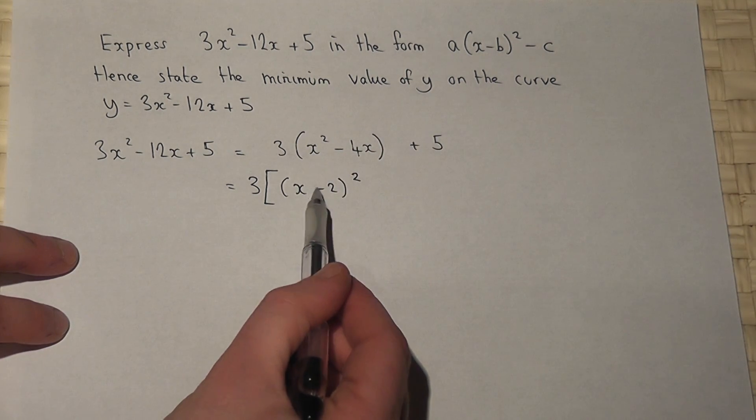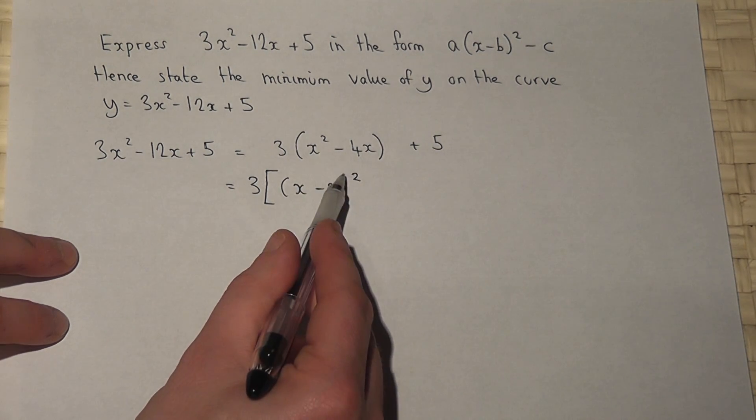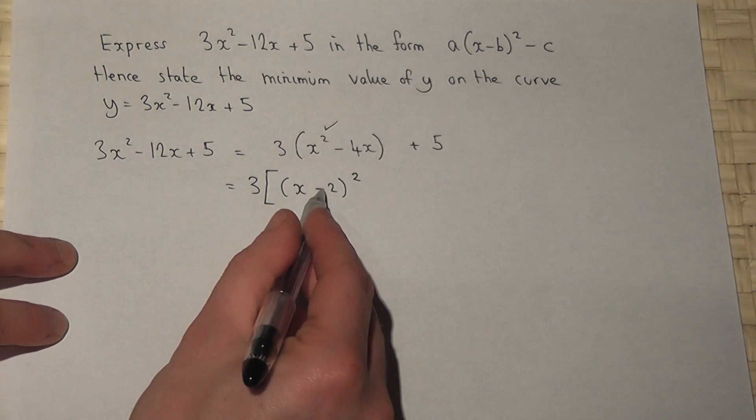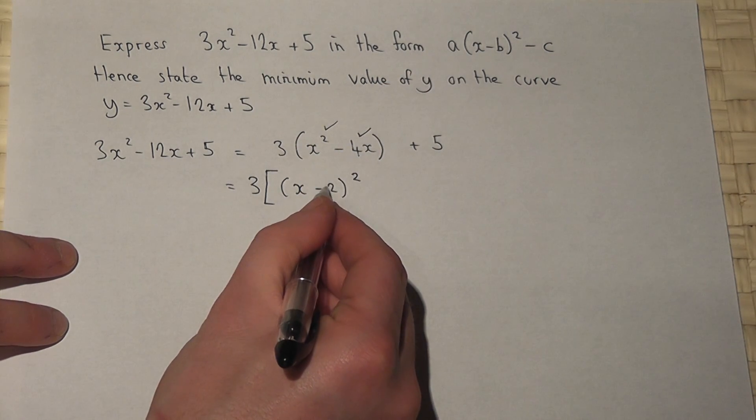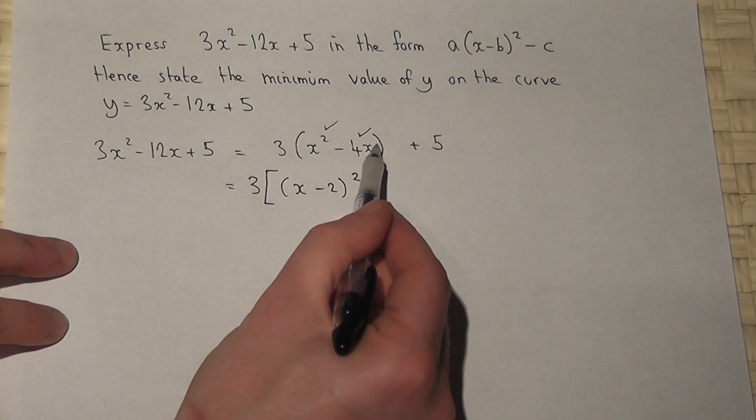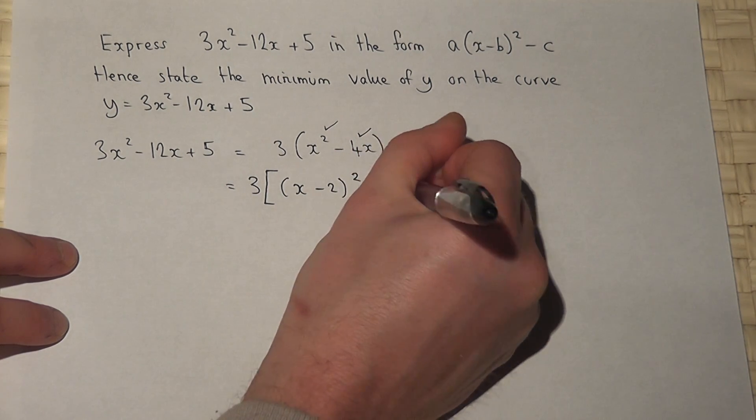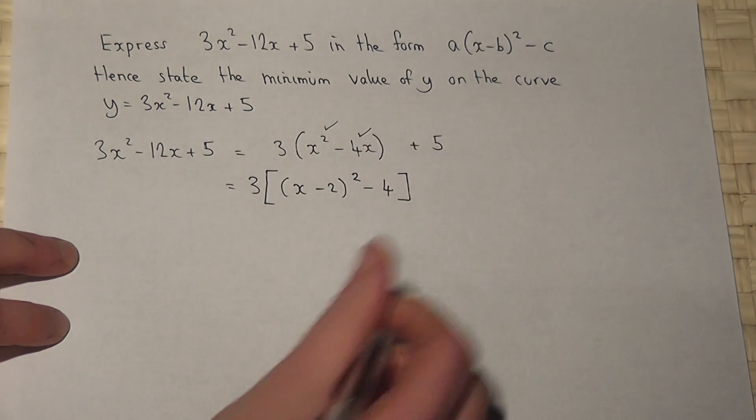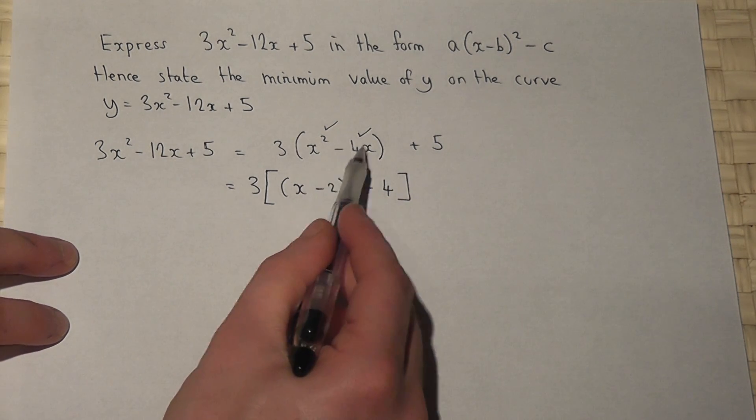x minus 2 all squared is the same as x squared, take away 4x, but I also get a minus 2 squared, which is a plus 4. And there's no plus 4 in the original expression, so I must take away 4. This here expands to x squared minus 4x.